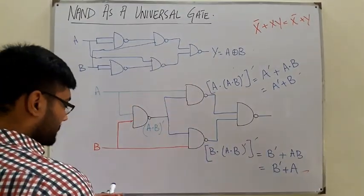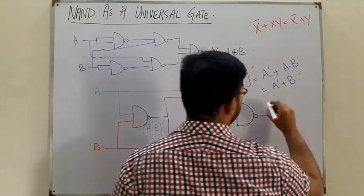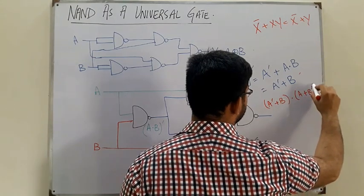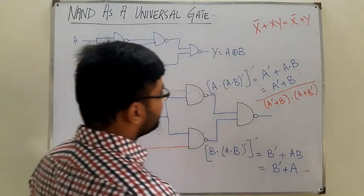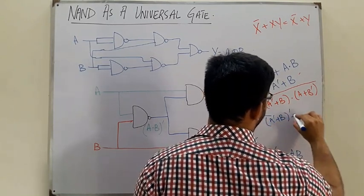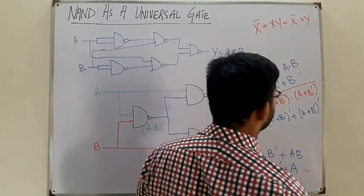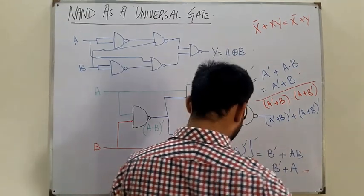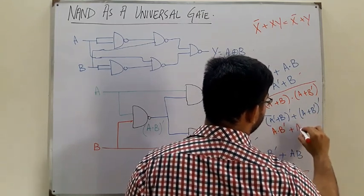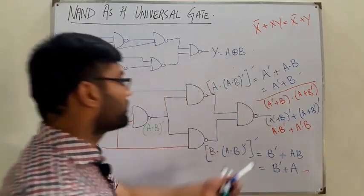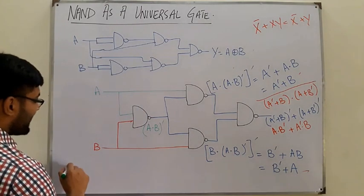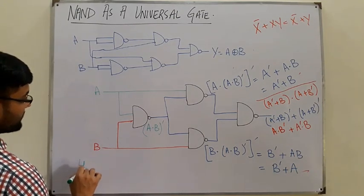Gate 4 takes (A complement + B) AND (A + B complement), then complements the whole thing. Applying De Morgan's law twice gives (A complement + B) complement OR (A + B complement) complement, which equals A·B complement + A complement·B — this is exactly the XOR operation. So to get Exclusive-OR from NAND gates, the best implementation uses four NAND gates.